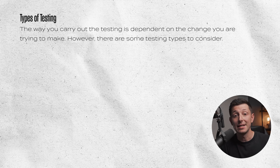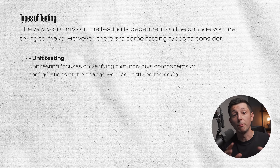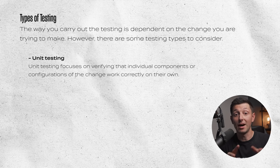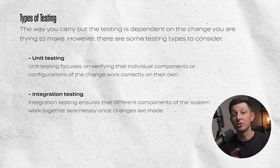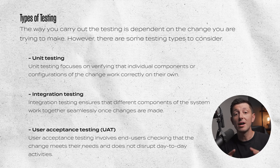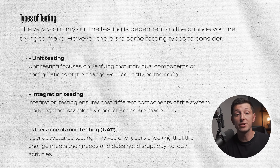There are some testing types to consider. Unit testing focuses on verifying that individual components or configurations of the change work correctly on their own. For example, before implementing a new firewall rule to block a specific IP address, unit testing would check that the rule correctly identifies and blocks traffic from that IP without affecting any other traffic. Integration testing ensures that the different components of the system work together flawlessly after changes have been made — for example, confirming the new firewall rule doesn't interfere with VPN connections or web filtering.